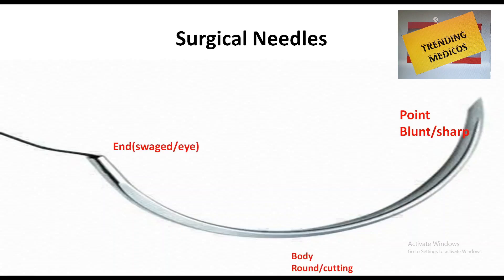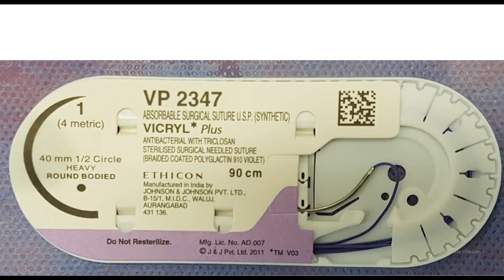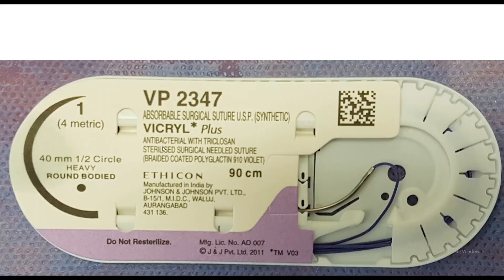Steel suture is silver in color. It may be monofilament or multifilament and is composed of 316L stainless steel. It is used in sternal closure and orthopedic procedures.